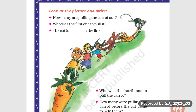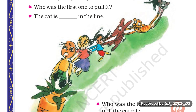Toh children, first, second, third, fourth, fifth, sixth — all these are called ordinal numbers. Inko ordinal numbers kehte hain. They show the order — order means exact order bataate hain. Yeh kaunse sthaan par hai? Pehle sthaan — first, doosra sthaan — second, teesra — third, chautha — fourth, paanchwa — fifth, chhatha — sixth. Is tarah se ordinal numbers ko hum count karte hain.